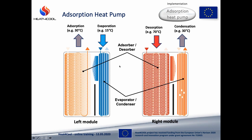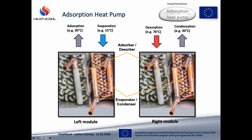To keep this process continuous we have to have at least two such modules working out of phase. When in one module the sorbent is absorbing water, in the second module the sorbent is being regenerated. In the real machine we have two fin-and-tube heat exchangers — one, typically the bigger one, is coated with sorbent (in this case silica gel) and the second one is not coated. The heat transfer fluid HTF flows inside the tubes.